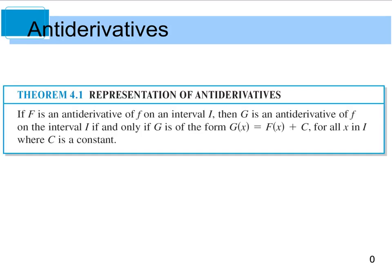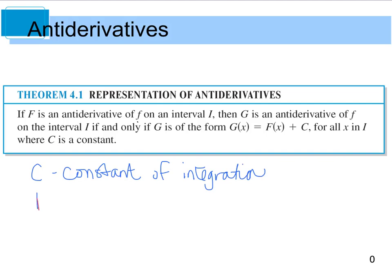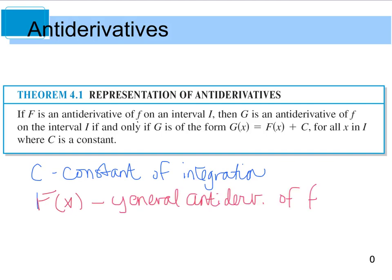Theorem 4.1 says: if F is an antiderivative of f on an interval I, then G is an antiderivative of f on that same interval if and only if G(x) = F(x) + C for all x, where C is a constant. C is what we call the constant of integration, and F(x) is our general antiderivative of f. The equation F(x) = x³ + C is what we call the general solution.